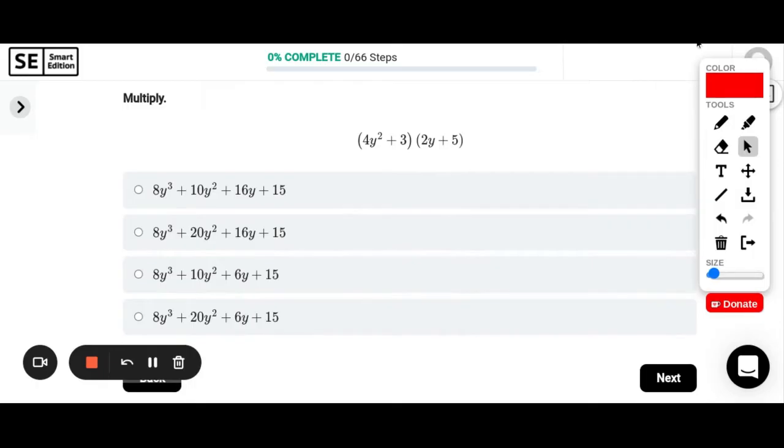For this one we need to multiply two binomials. So to multiply binomials I like to think of the acronym FOIL. FOIL stands for first, outer, inner, and last. So these are the four sets of terms that I am going to multiply. So first I will do 4y squared times 2y. That's the first in each parenthesis. So 4 times 2 is 8, y squared times y is y to the third. Now outer I do the two on the outside: 4y squared times 5. 4 times 5 is 20, so 20y squared.